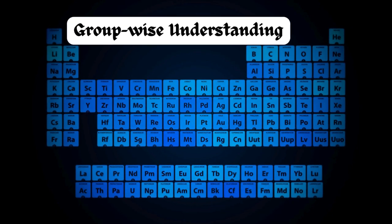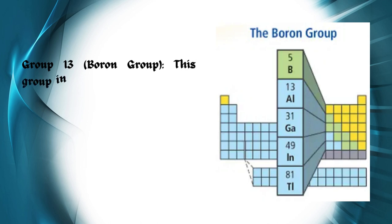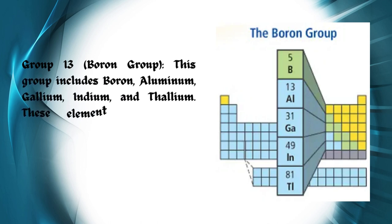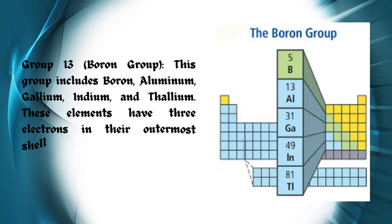Group-wise understanding. Group 13, Boron Group: This group includes boron, aluminum, gallium, indium, and thallium. These elements have three electrons in their outermost shell.